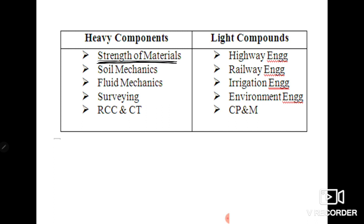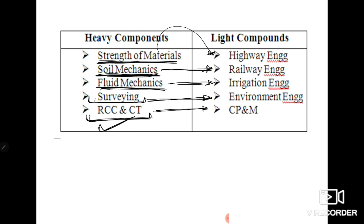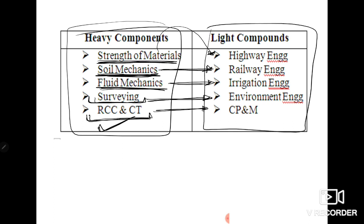Now coming to strategy, our strategy's first point is that we can divide the components based on heavy components and light components. In heavy components we have taken Strength of Materials because the syllabus is very extensive with 15-20 chapters covering mechanics and structural analysis. Soil Mechanics and Foundation Engineering also has 15-20 topics to cover for competitive exam. Fluid Mechanics is also a lengthy subject. Surveying, although not as lengthy, has many topics.